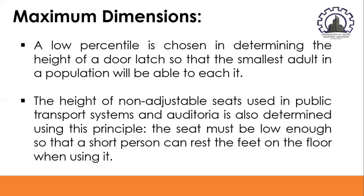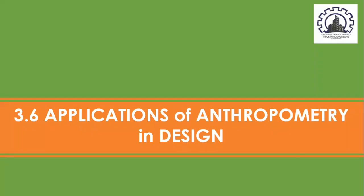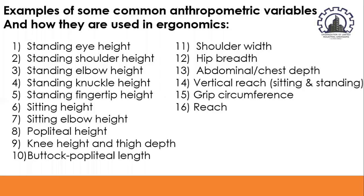Functional anthropometric data show the shapes of reach envelopes and the allowable and preferred zones for the placement of controls in a workspace. The next key area is the applications of anthropometry in design. We will acknowledge the different common anthropometric variables and how they are used in ergonomics. There are 16 examples of common anthropometric variables.